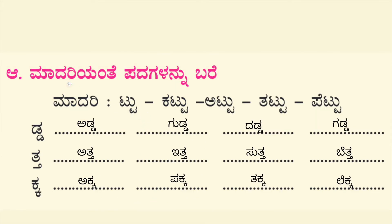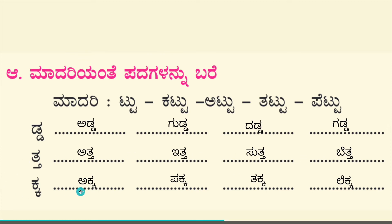Next exercise: as per the given example, make similar words. The example given uses the pattern Tu — Kattu, Attu, Tattu, Pettu. With D: Adda, Gudda, Dadda, Gadda. With Th: Atta, Itta, Sutta, Betta. With K: Akka, Pakka, Takka, Lakka.